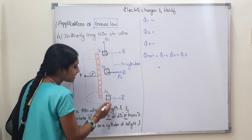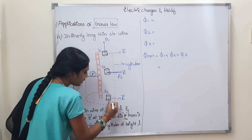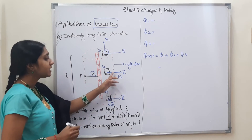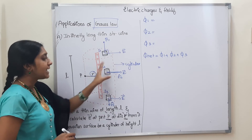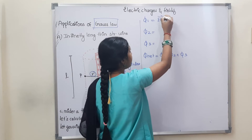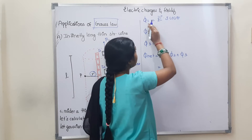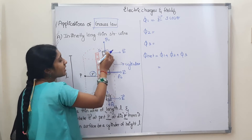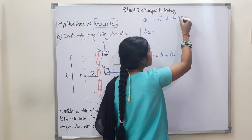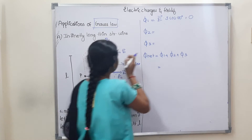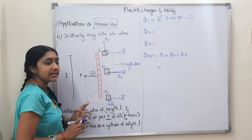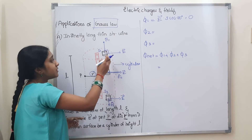For the curved surface, the electric field and the normal are in the same direction — that is, 0 degrees. For the top and bottom circular surfaces, the electric field is perpendicular to the normal — that is, 90 degrees.